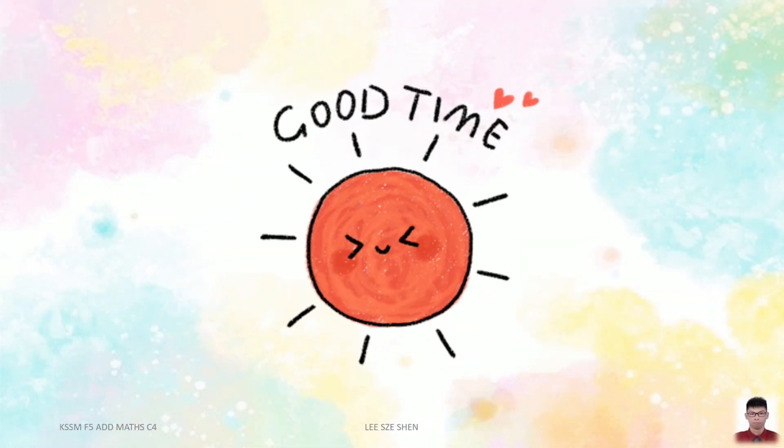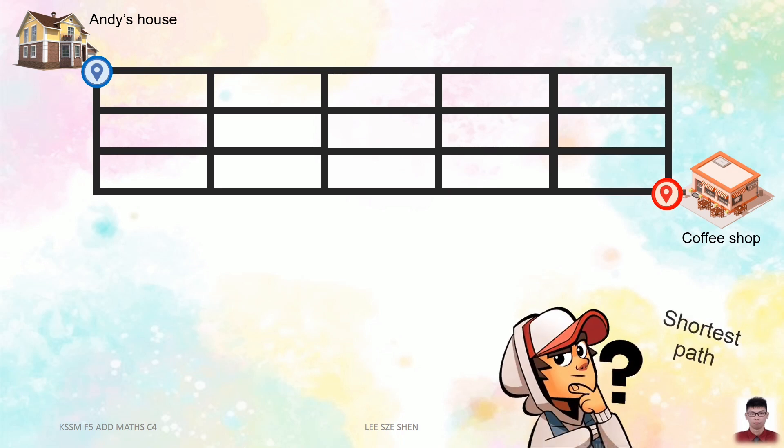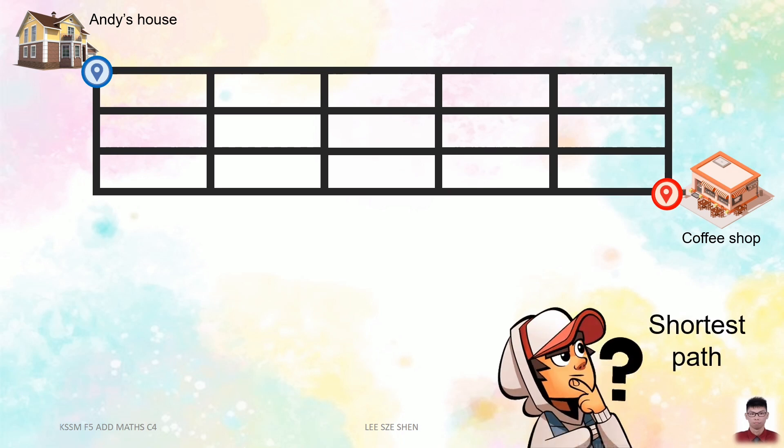Let's start with a story. There is a person called Andy. He would like to travel from his house to the coffee shop to drink some coffee. Those black lines there are actually the roads and they form junctions when crossing each other. Andy hopes to reach the coffee shop as fast as he can. Which path would you suggest Andy to choose?